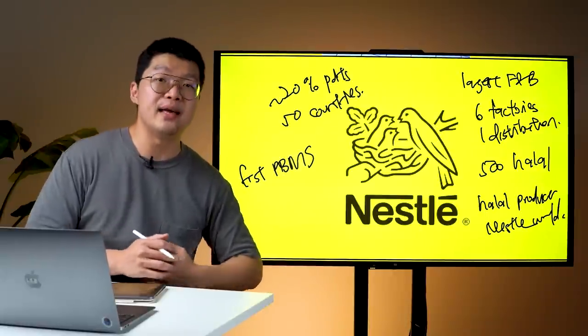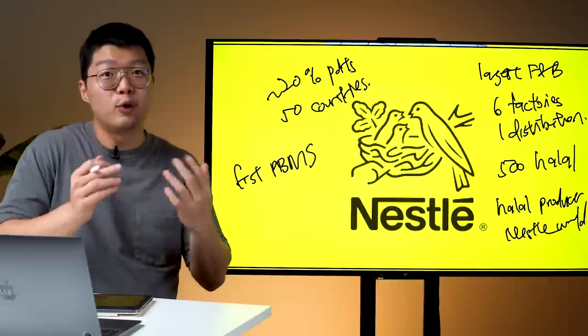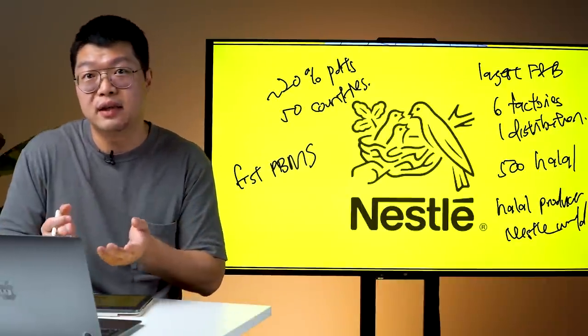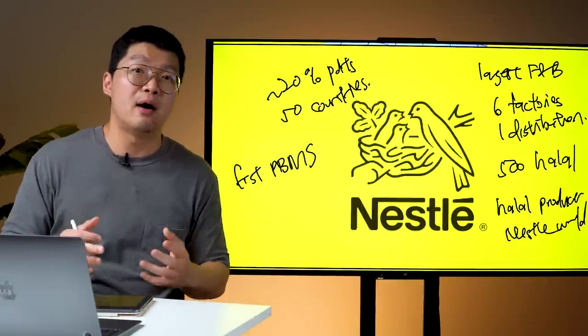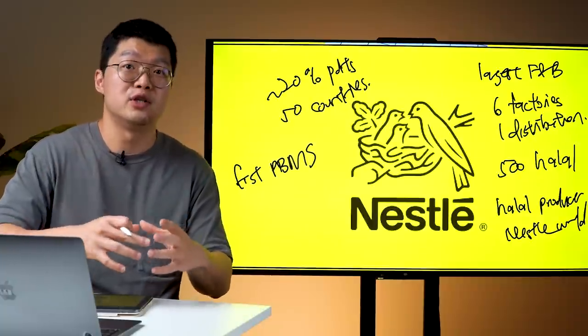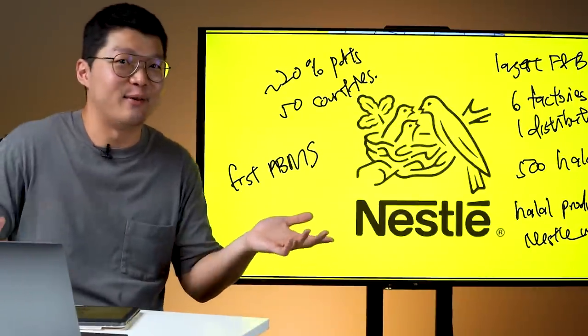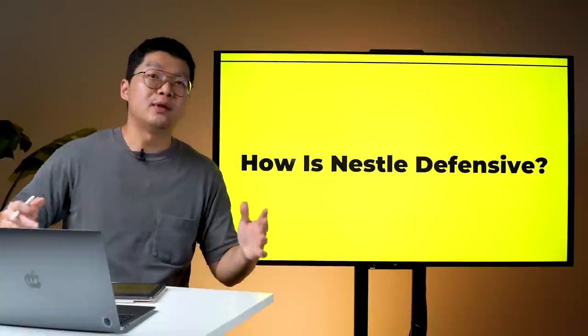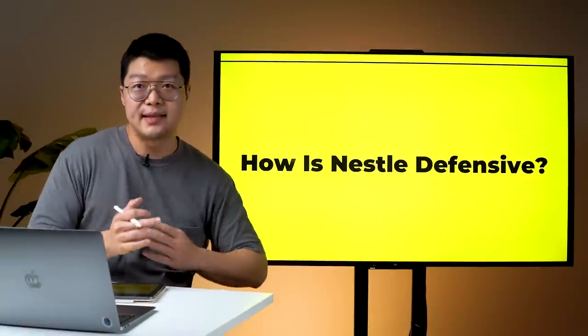And lastly, they also established the first PBMS in Southeast Asia. PBMS stands for plant-based manufacturing solutions. For those people who are vegetarian or they want to find meat alternatives, Nestle has just come out with a new product which is plant-based that tastes like meat.